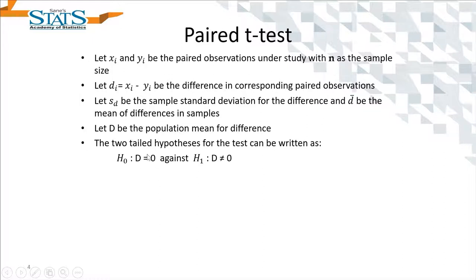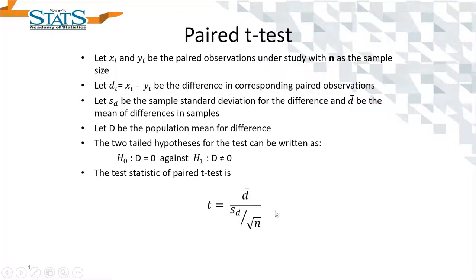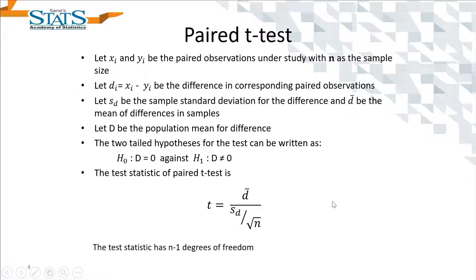That is, H0: no difference between x and y, versus H1: there may be a difference between x and y. The test statistic for this is the same as the one-sample t-test, and you will find a similarity between the one-sample t-test statistic and this test statistic, with degrees of freedom n minus 1.